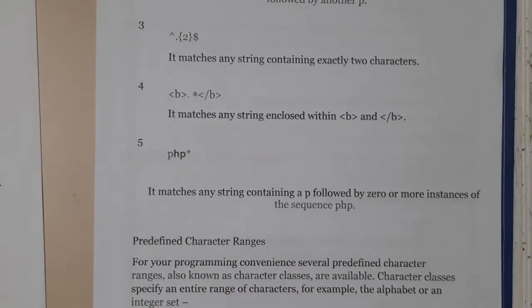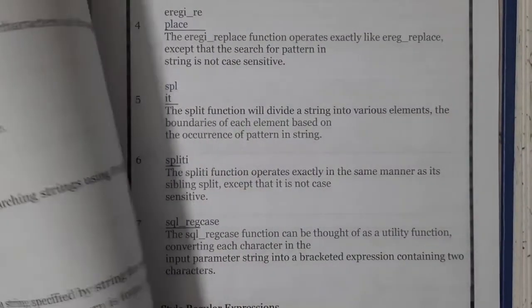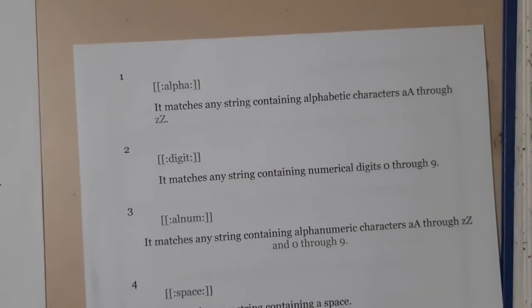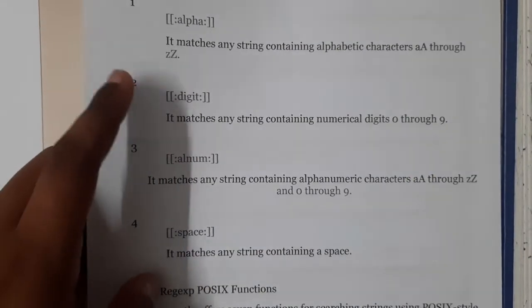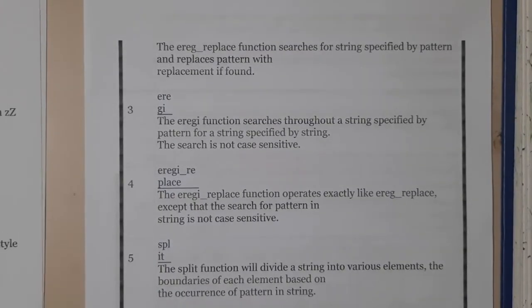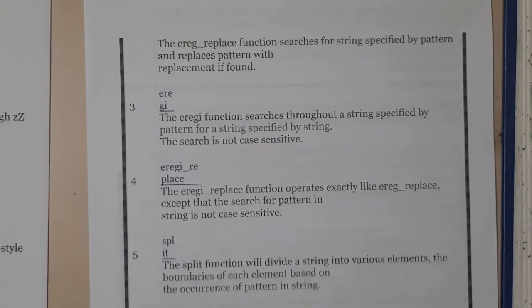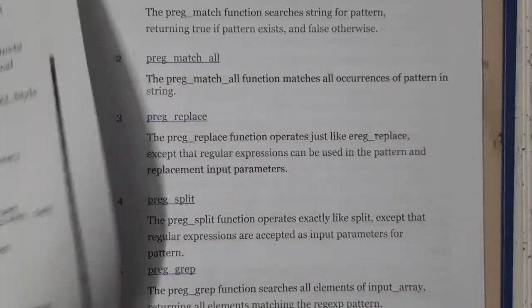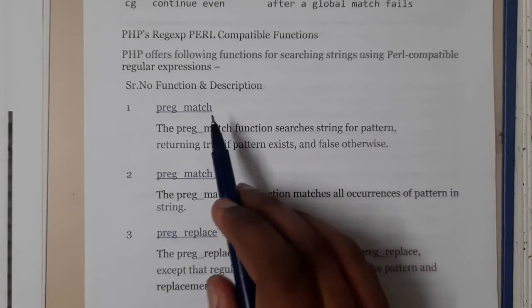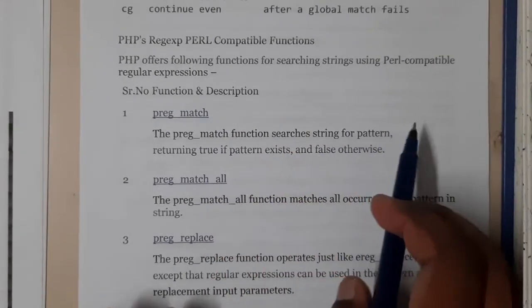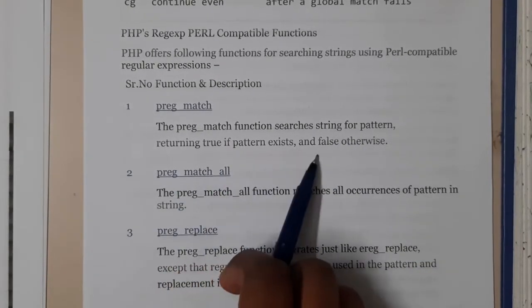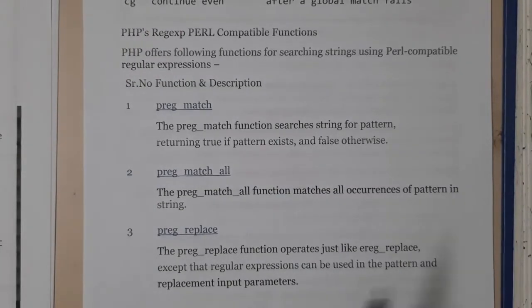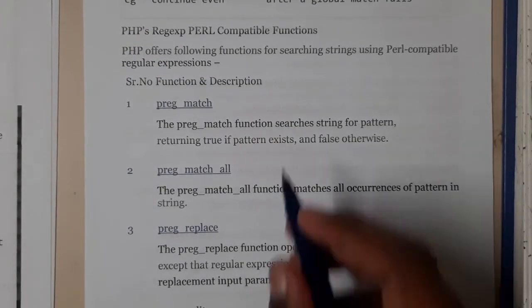You can go through more examples. Similarly, there are also some expressions with colons — please go through them. In Perl-style regular expressions, we use 'preg_match'. This function searches a string for a pattern, returning true if it exists and false otherwise.